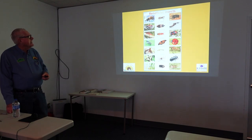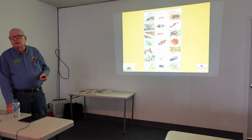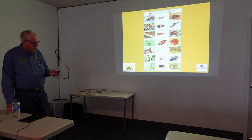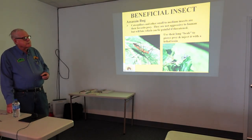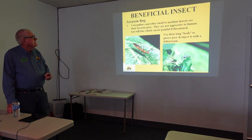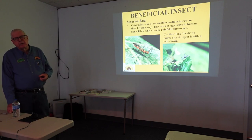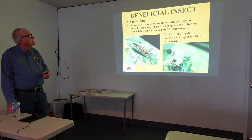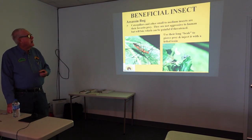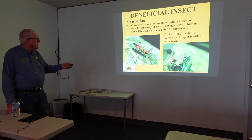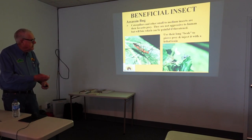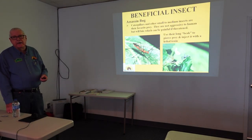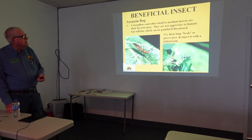Here's a picture that captures a lot of the common beneficial insects — we'll talk about these as we go along. The first one is the assassin bug. They are kind of ominous, but they are a good beneficial insect. They eat caterpillars and other small insects as their favorite prey. They are not aggressive to humans, but they will bite if they're threatened. They use that long beak to pierce their prey and inject it with a lethal toxin.